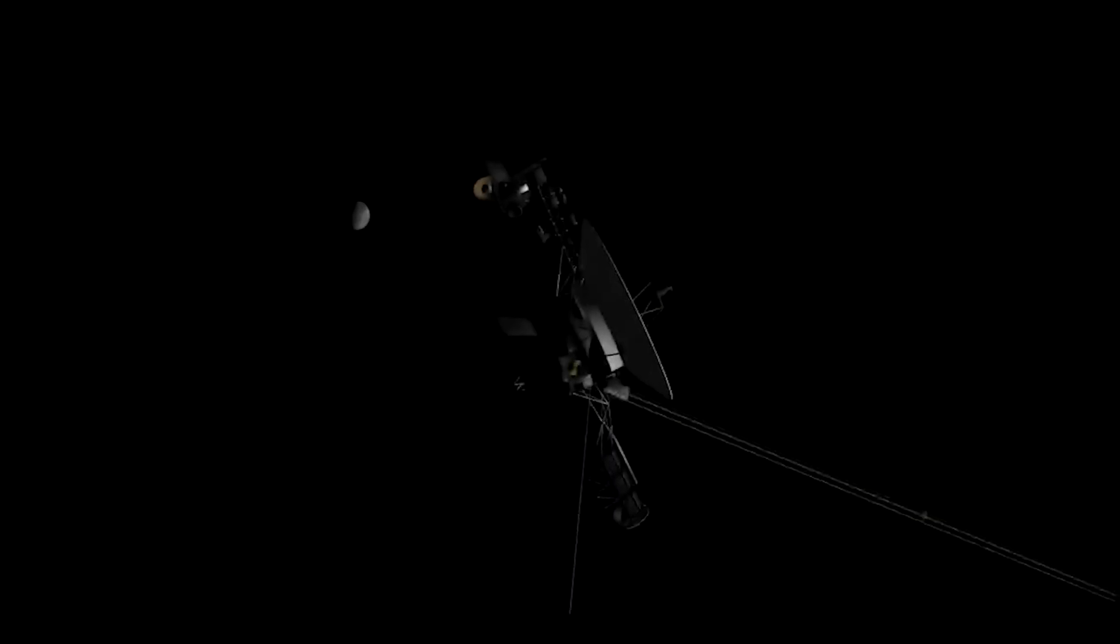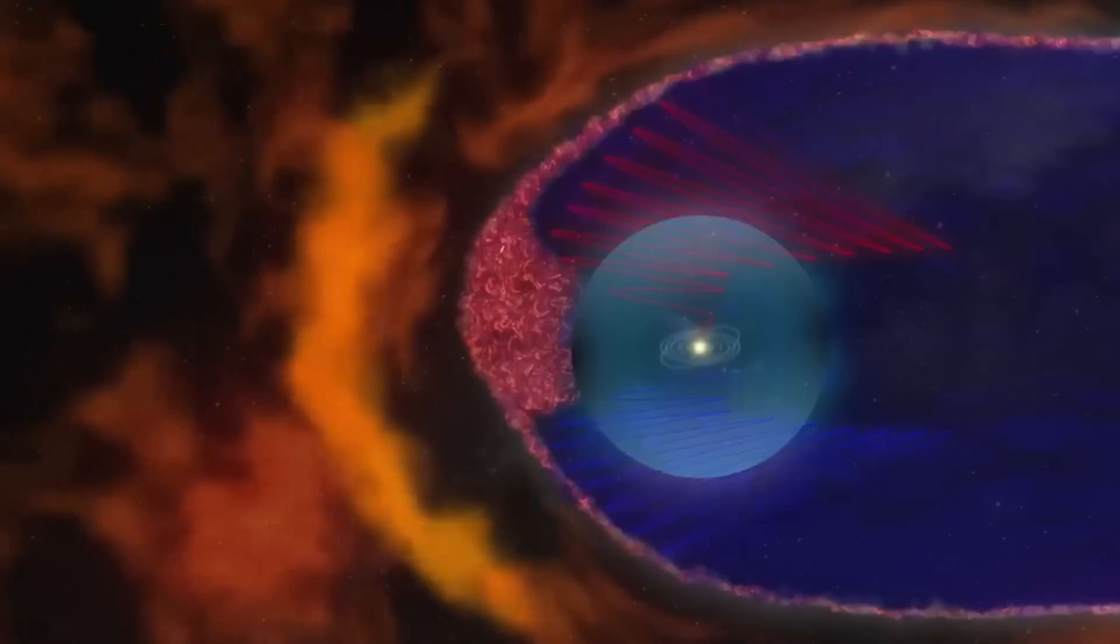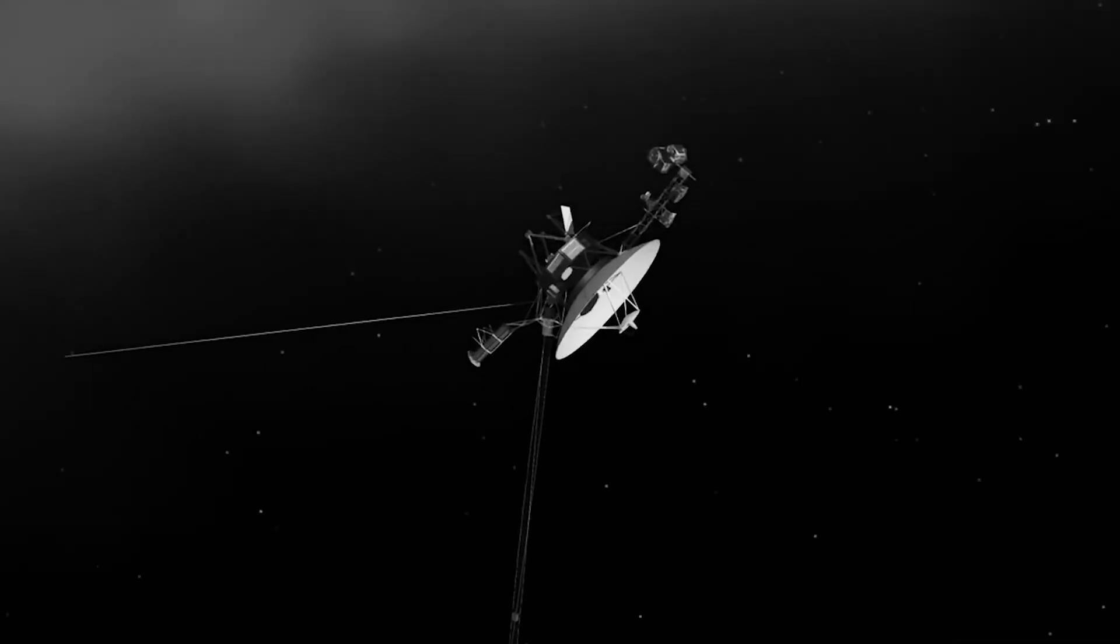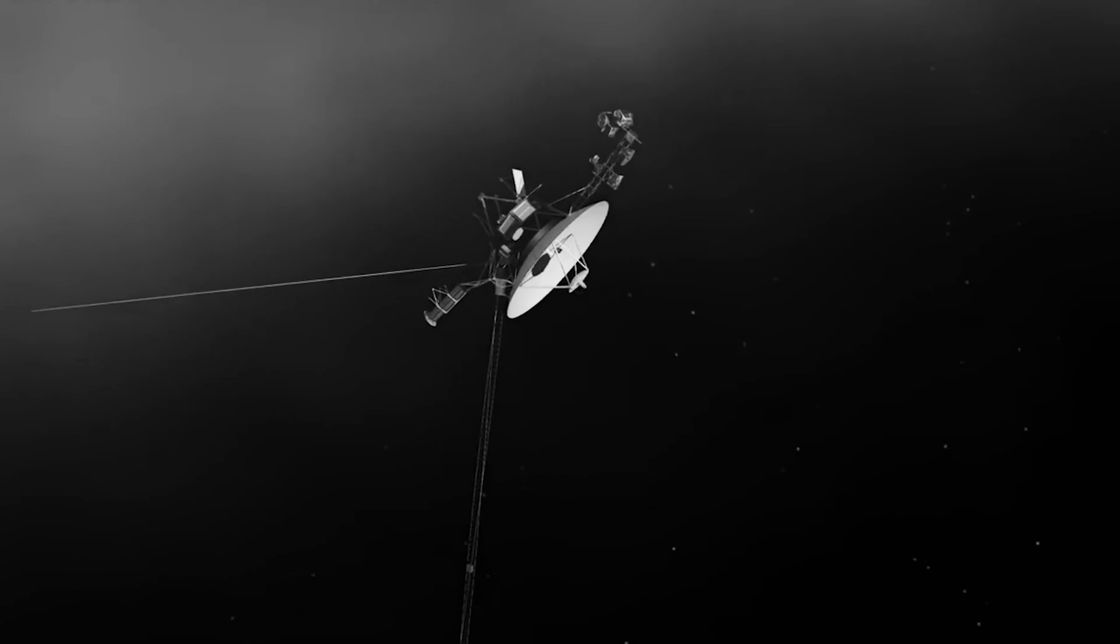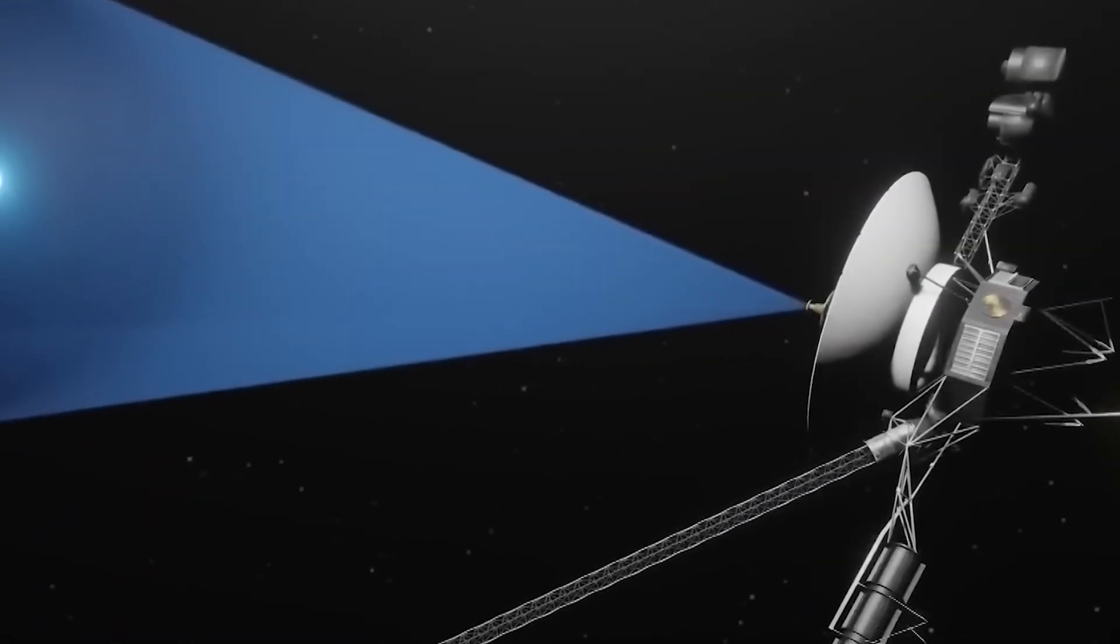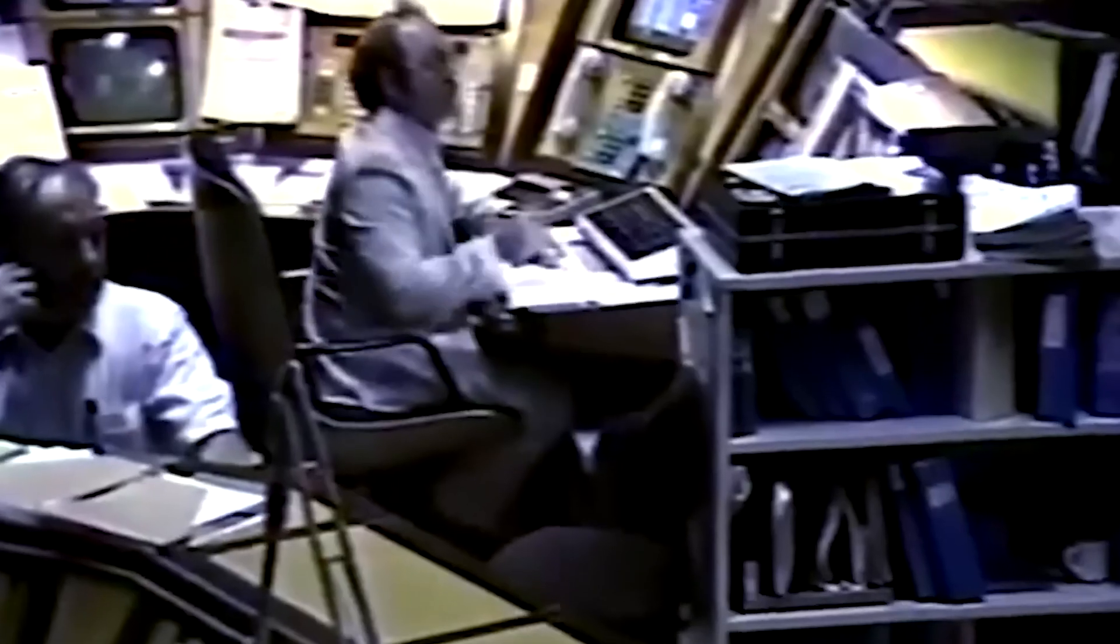However, there was only one problem to consider. Voyager 1 had been built decades ago and had been performing excellently up to that point. Therefore, finding a solution to current problems would be a major challenge. It was necessary for them to review several manuals from the 1970s, and that is exactly what they did.